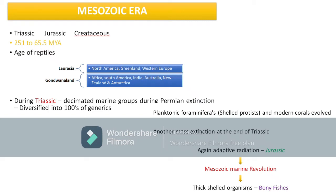Welcome everyone. In the last class we discussed the Paleozoic era, so now we will see the Mesozoic era and Cenozoic era. The Mesozoic era is classified into three periods: Triassic, Jurassic, and Cretaceous. These are very important because most vertebrate evolution and diversification can be seen in the Mesozoic era.